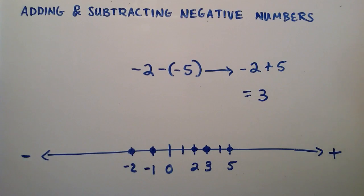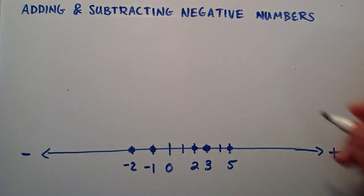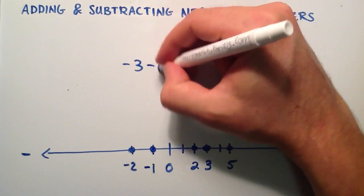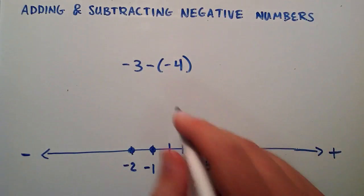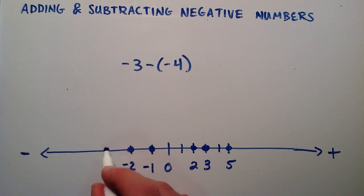So let's do another example like that. Let's start with negative 3, and then we'll subtract a negative 4. So we start at negative 3, so 0, minus 1, minus 2, minus 3 puts us here.